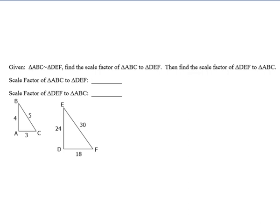Now a couple of examples about scale factor. Given that triangle ABC is similar to triangle DEF, find the scale factor of ABC to DEF. Whatever figure comes first, start with a number from that triangle. Pick a number in ABC — let's pick 4. AB matches with DE, so the scale factor is 4 to 24, which simplifies to 1 sixth.